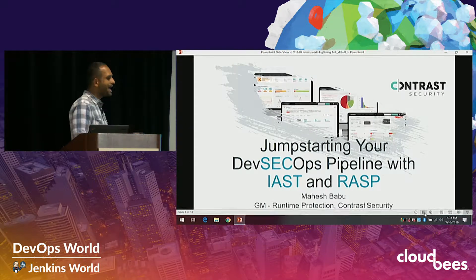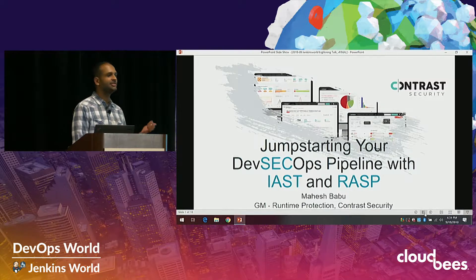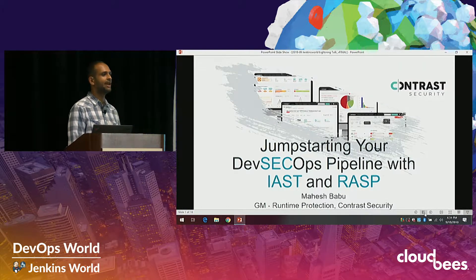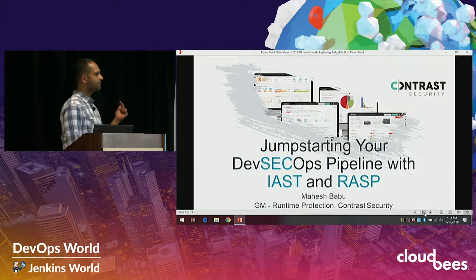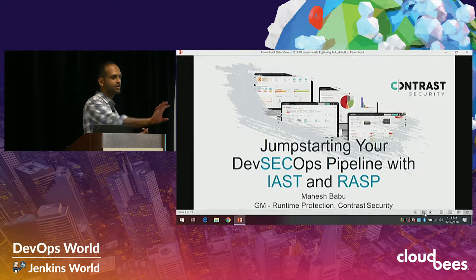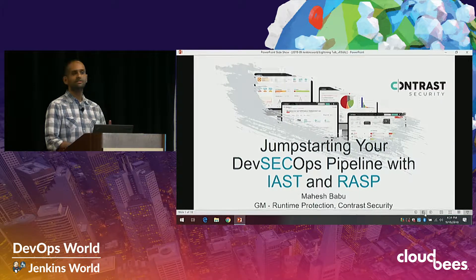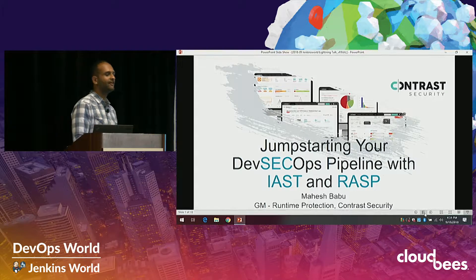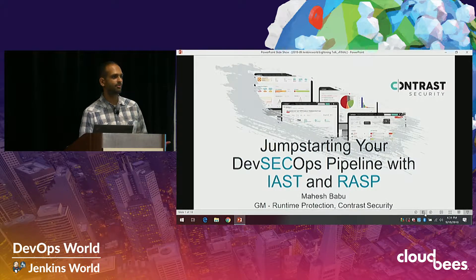IAST helps you find vulnerabilities in your app as you're building it, without doing a scan or bringing in a bunch of pen testers. RASP helps you defend your app against those vulnerabilities once you push your app into production — again, without buying a firewall or hiring a bunch of pen testers or running a bug bounty program.